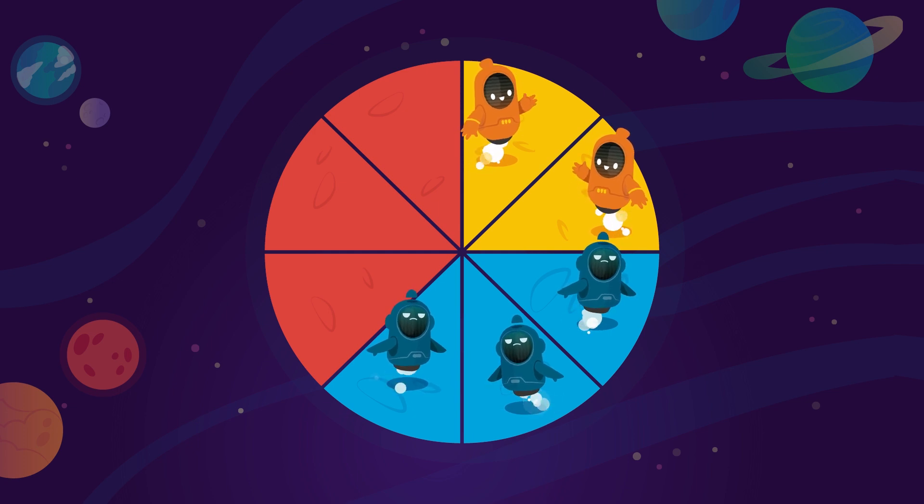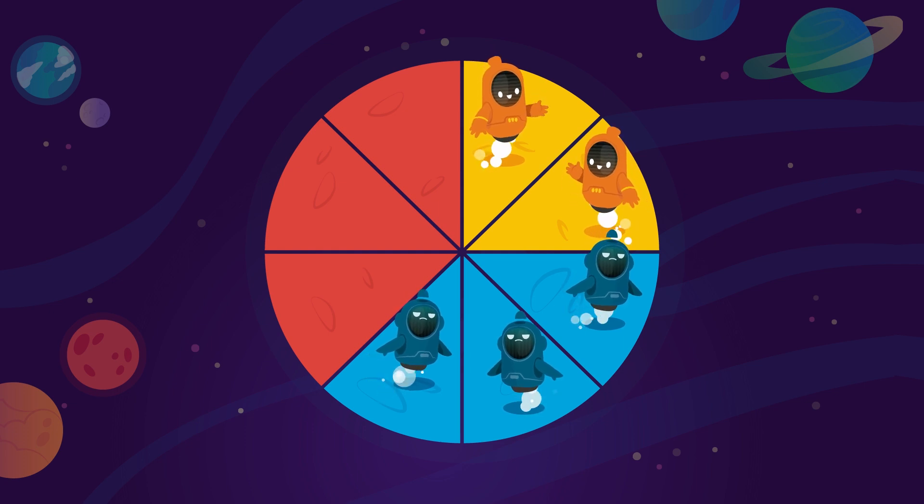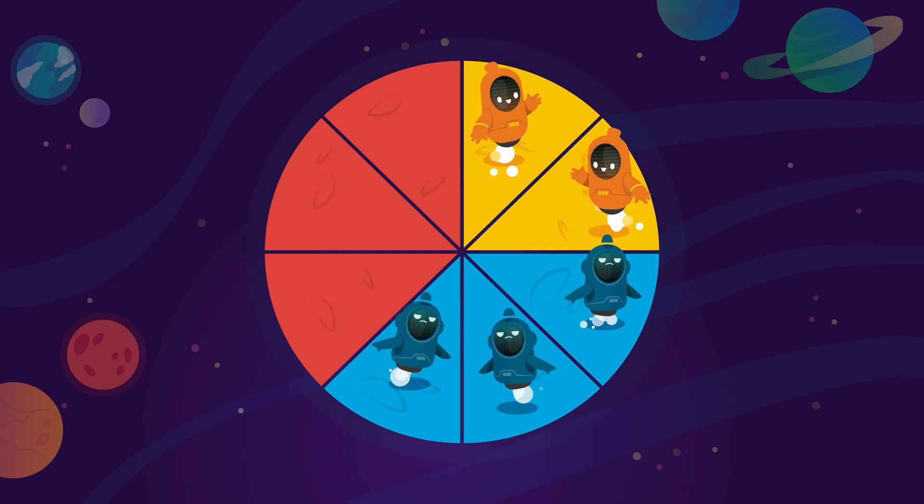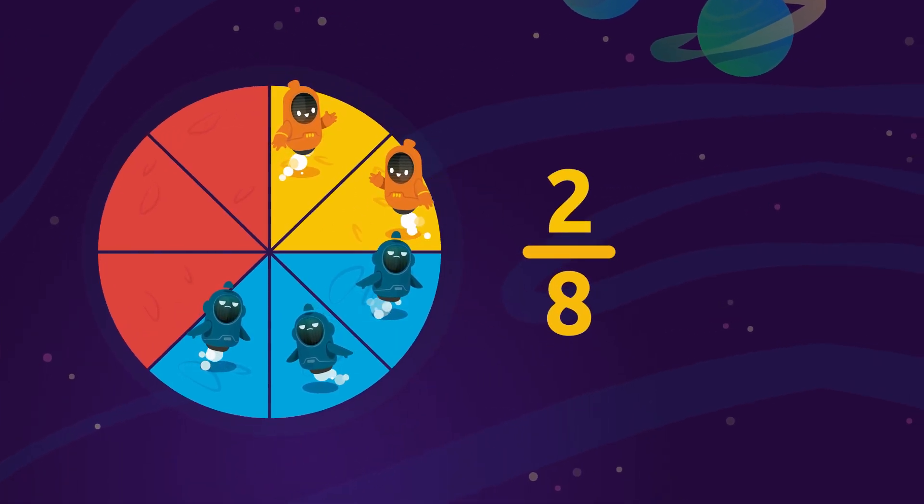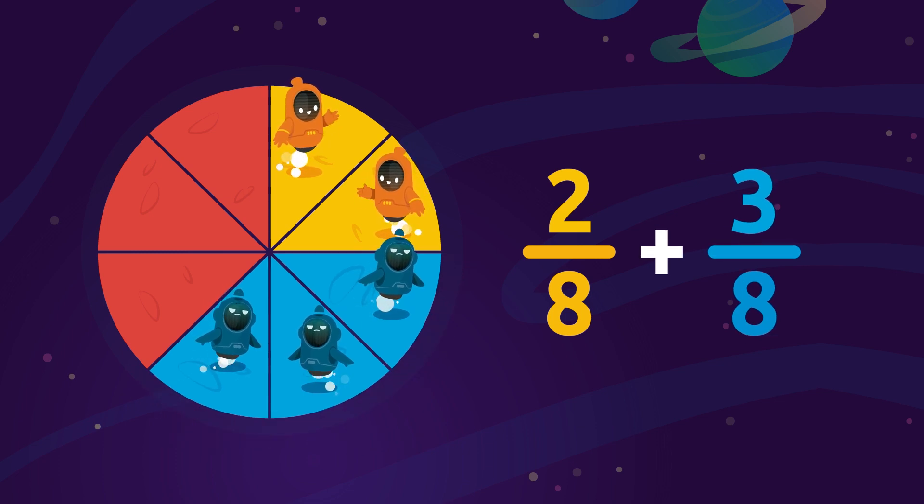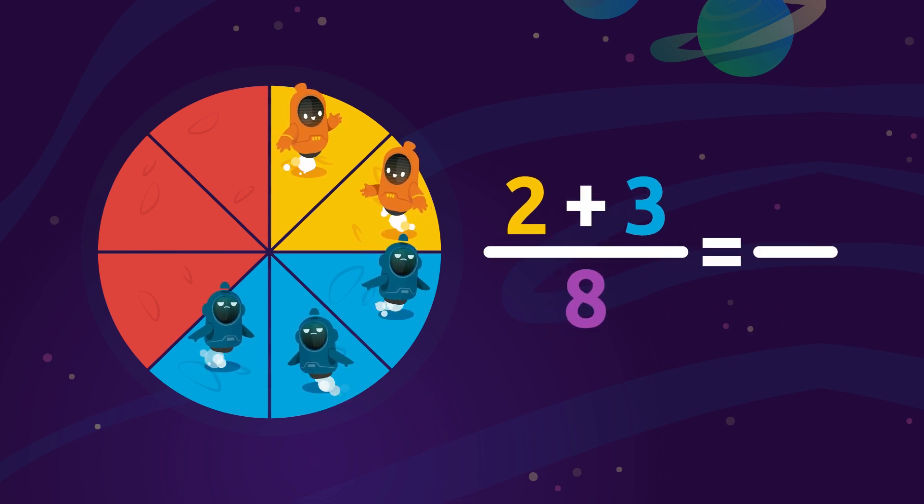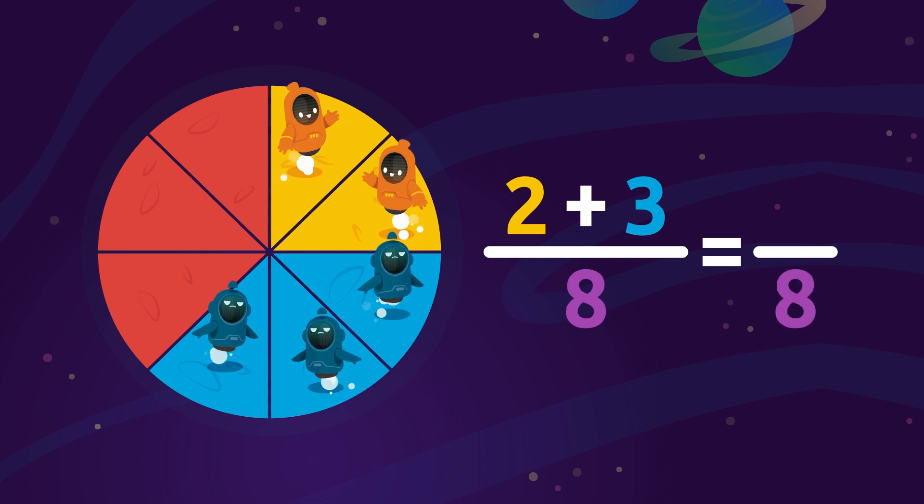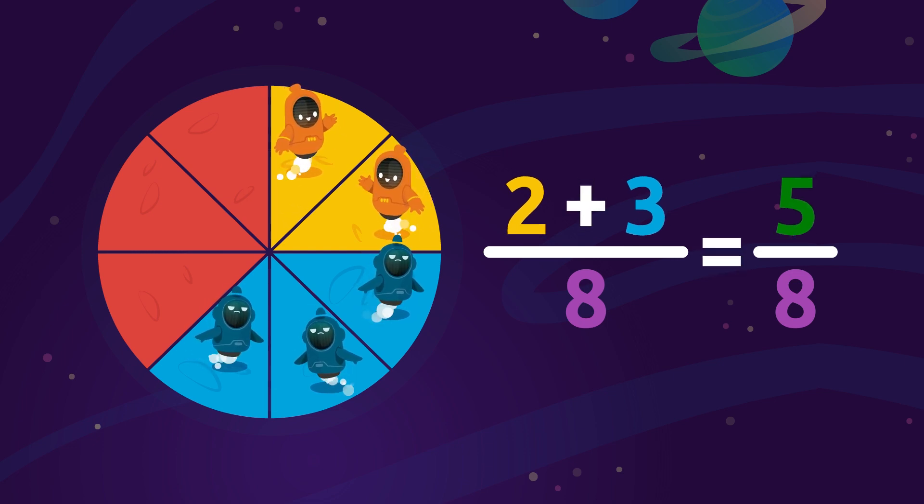What fraction would represent the overall number of land occupied by all the aliens on the planet? To find out we'll need to add the fractions 2 over 8 plus 3 over 8. Do you remember how to do this math operation? Remember that the result would have the same denominator, in this case it would be the number 8. And now to calculate the numerator we'll add the numerators 2 and 3 which equals 5. The result will be that five eighths of the land are occupied by aliens.